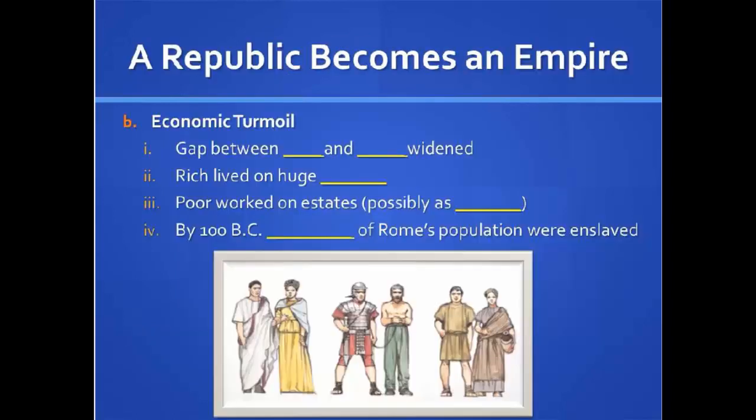Economic turmoil: the gap between the rich and the poor widened. The rich lived on their huge estates and large properties, where the poor worked, possibly even as slaves or paid very little. By about 100 BC, one-third of Rome's population were enslaved — so for every nine people, three of them were slaves. That's a pretty large number. The more slavery or poor people you get, with fewer upper class, you're going to get a widening gap between the two and a lot of problems between them.